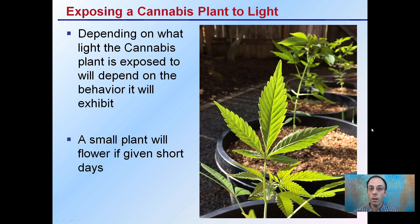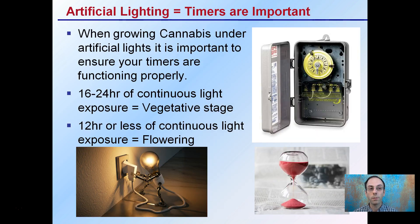Depending on what light the cannabis plant is exposed to, that will determine the behavior it exhibits. A small plant will go into flower if given short days. This is particularly important for those using artificial light, to make sure their timers are set properly. When growing cannabis under artificial light, it's important to ensure the timers are functioning correctly.